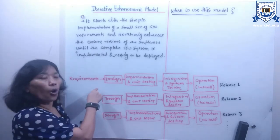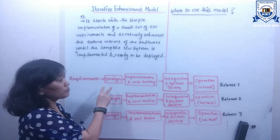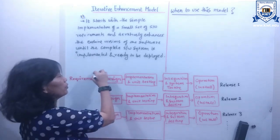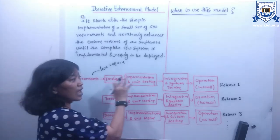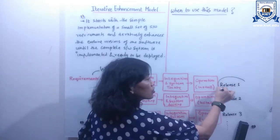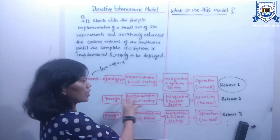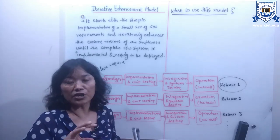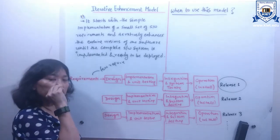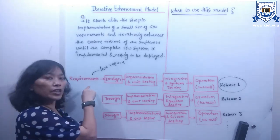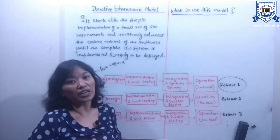As you can see in the diagram, all the requirements are gathered at the beginning of the development, and then it starts with a few requirements. It starts developing the process and at the end of each iteration it releases a small model of the software, until a complete software system is implemented and deployed to the customer. One important thing to notice here is that by using the iterative enhancement model, we need all the requirements at the beginning of the life cycle.